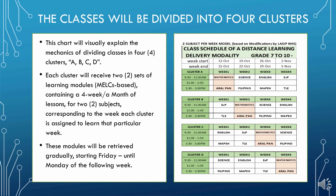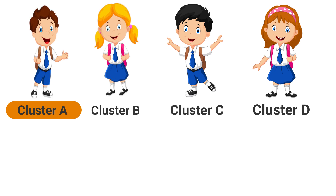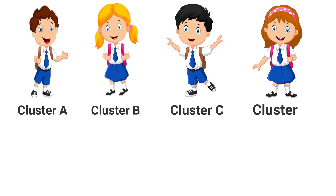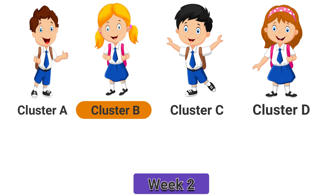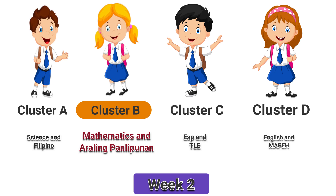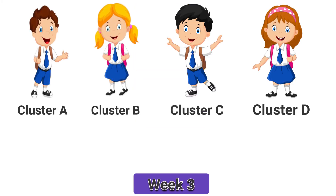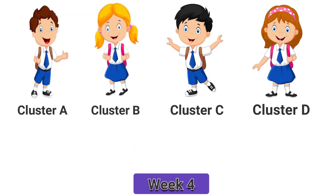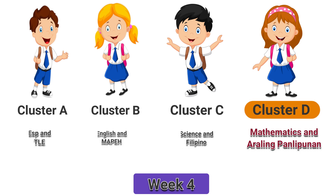This is the schedule of the distance learning delivery modality for grades 7 to 10. All clusters will be receiving 2 learning modules per week. For example: Cluster A on the first week will receive mathematics and Araling Panlipunan. There will be a reshuffling of learning modules, and Cluster B on the second week will work on mathematics and Araling Panlipunan. On the third week, Cluster C will receive mathematics and Araling Panlipunan. And finally, on the fourth week, it's the turn of Cluster D to answer mathematics and Araling Panlipunan.